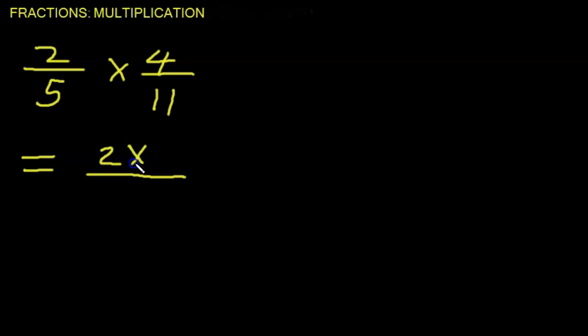So hence, we'll have 2 times 4. And we'll put that over denominator times denominator. So that becomes 2 times 4, which is 8, over 5 times 11. What's 5 times 11? That's 55.